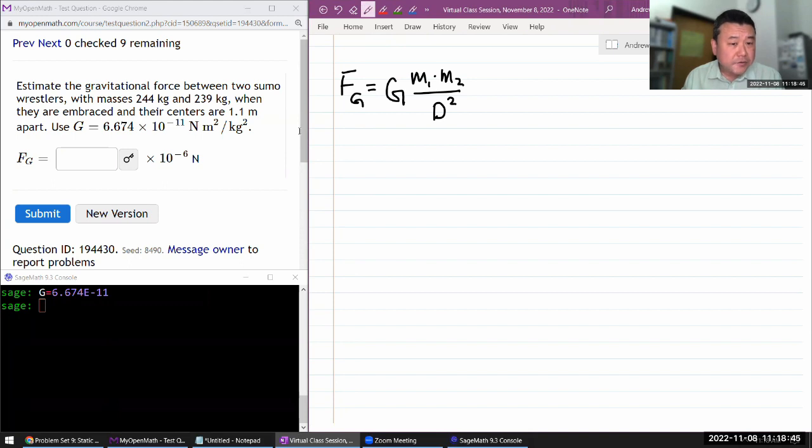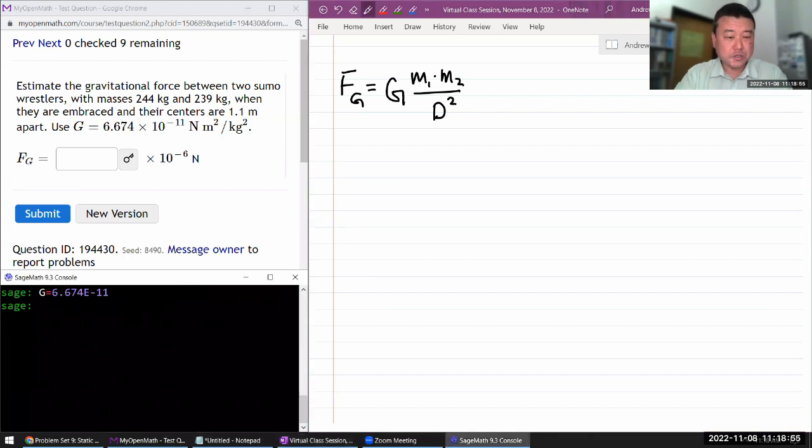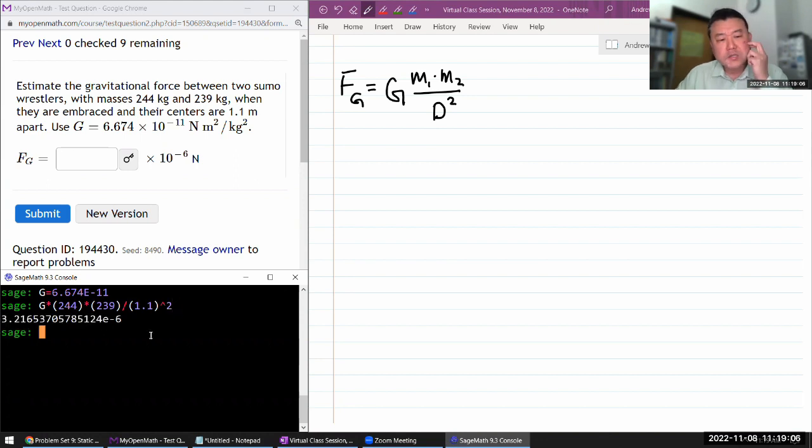So I think I just have to plug in the numbers. I'm given everything. I'm given the two masses. I'm given the distance between their centers. So G times the product of two masses, 244 times 239, divided by the distance, 1.1 squared. And by the way, the question is hinting at it with the word estimate.